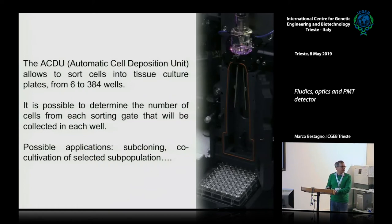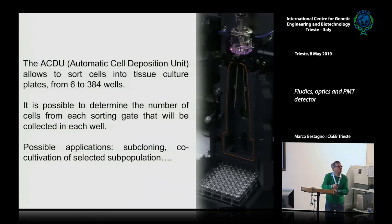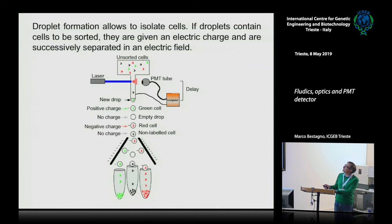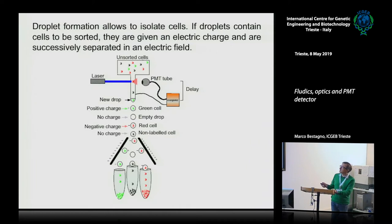From the Q&A: a question was asked about how the droplet gets charged. The answer is that an electric wire connected to the stream formation delivers an electric pulse from the computer when a signal is detected that corresponds to the set parameter. The charge is given to the droplet as soon as it is separated from the stream, and this charge stays with the droplet, allowing the cell to be deflected and separated.